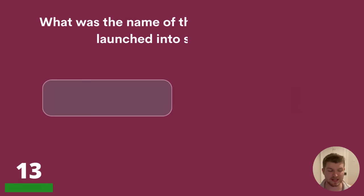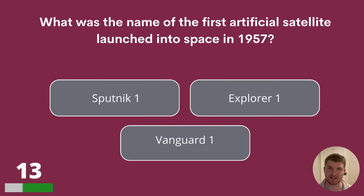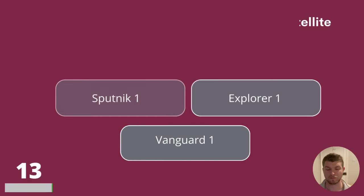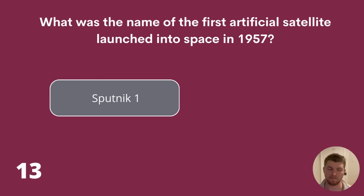Question 13. What was the name of the first artificial satellite launched into space in 1957? Sputnik 1, Explorer 1 or Vanguard 1? The answer is Sputnik 1.